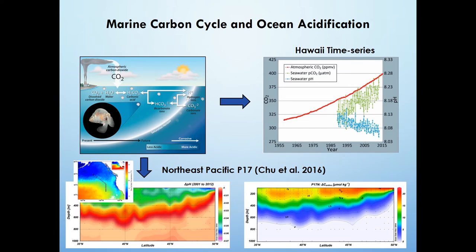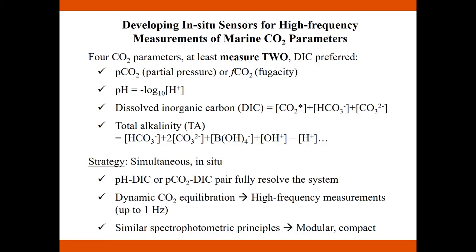The marine carbonate system plays an important role in the marine carbon cycle. As CO2 concentration increases in the atmosphere, it causes ocean acidification and changes in the marine carbon cycle, which also have detrimental impacts on marine biology and ecology. To resolve the seawater CO2 system, we need to measure at least two of the four measurable CO2 parameters. DAC is preferred because it introduces less calculation error when resolving the CO2 system from two measured parameters.